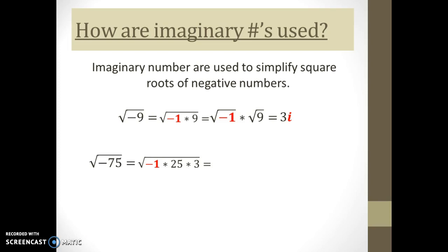Let's look at another example: the square root of negative seventy-five. We're going to factor out negative one, which leaves us with twenty-five times three. I went directly to twenty-five times three because I'm looking for perfect squares, and I know that seventy-five has a factor of twenty-five. Then I write it as three separate square roots and evaluate. The square root of negative one is i, the square root of twenty-five is five, and the remaining square root of three stays. So the answer is five i square root of three.